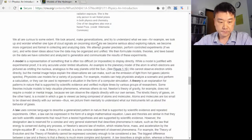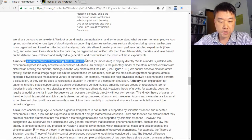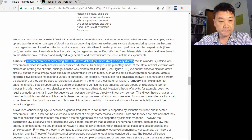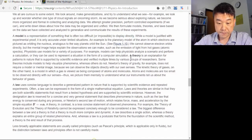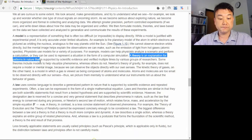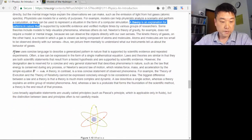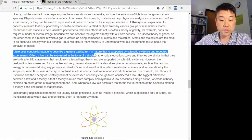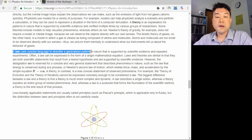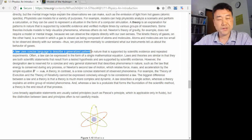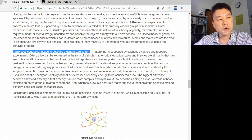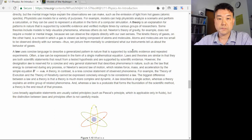A model is a representation of something that is often too difficult to display directly. A theory is an explanation for patterns in nature, and a law uses concise language to describe a generalized pattern. To make these distinctions clear, we really need a concrete example.